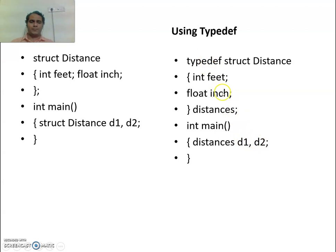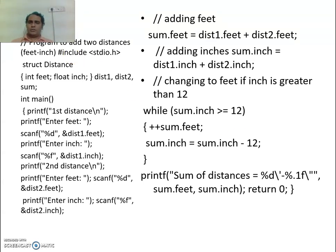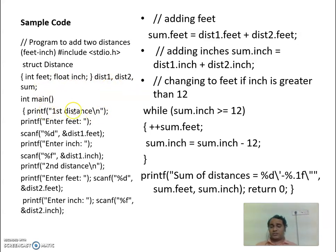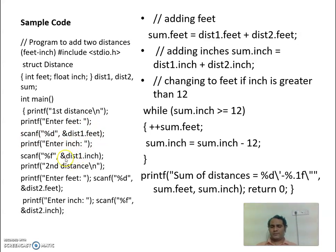Here d1 or d2 would get 2 bytes for integer plus 4 bytes for float, totalling 6 bytes. As a sample code example, we define a struct distance with integer feet and float inches. Variables distance1, distance2, and sum are declared. To read distance1's feet value, we use scanf with distance1.feet using the dot operator, and similarly for inches. The same is done for distance2.